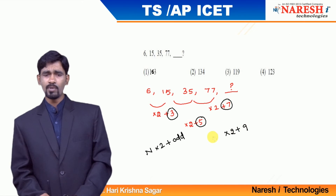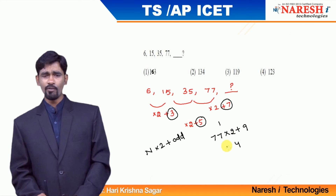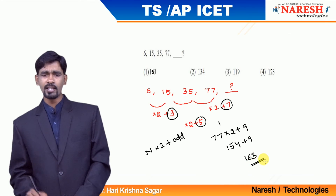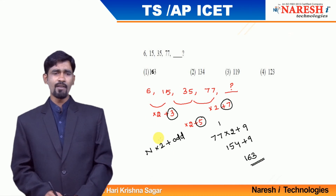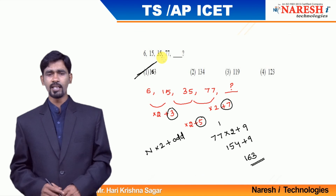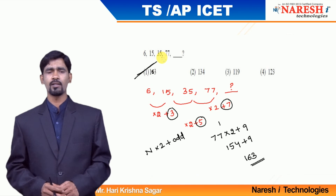What is the next term? 77 into 2 plus 9: 77 into 2 is 154, and 154 plus 9 gives a result of 163. 163 is available as option 1, so mark it as the answer.